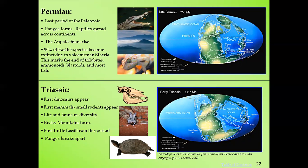During the Triassic period under the Mesozoic era, the first dinosaurs appeared. The continents were beginning to break apart again. The first small mammal rodents also appeared, and life and fauna began to rediversify — new organisms formed after the massive extinction caused by volcanism and lava flows.